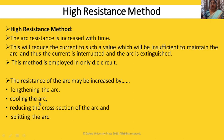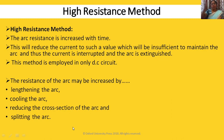The second method is cooling the arc, which will deionize the medium. Then, reducing the cross section of the arc: R = ρL/A — if you reduce the cross-sectional area, resistance will increase. And then splitting the arc — if you split that arc column with the help of splitters, resistance gets increased.